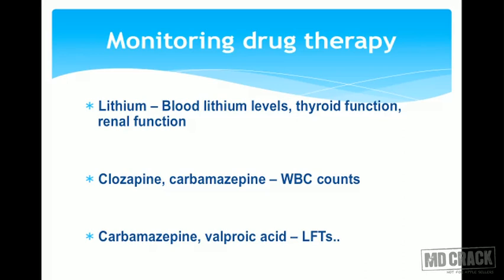Drugs like clozapine and carbamazepine are known to produce serious agranulocytosis, so regular WBC counts are essential. And again, drugs like carbamazepine and valproic acid can produce liver damage, so regular liver function tests will be extremely important.